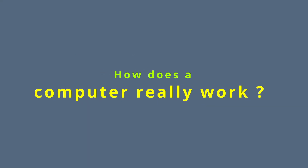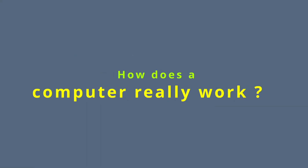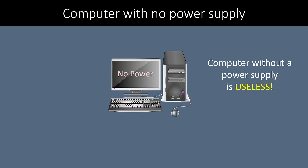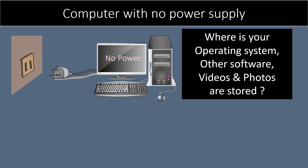In order to understand how a computer really works, let us consider a computer system which is powered off. The computer which is powered off is useless and can do nothing unless the power is on. We need to appreciate that electric power is the driving force behind the working of a computer. Where do you think your operating system, other softwares, photos and videos are stored when the computer is powered off?